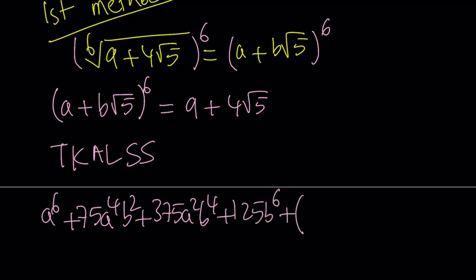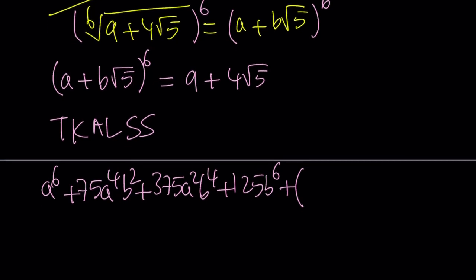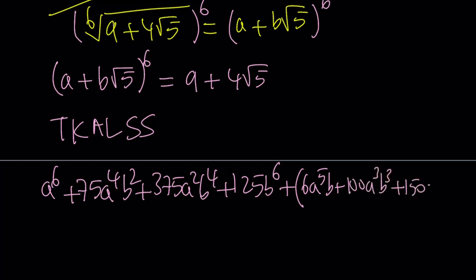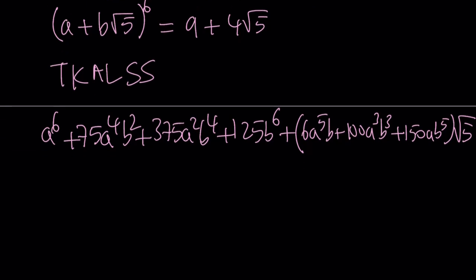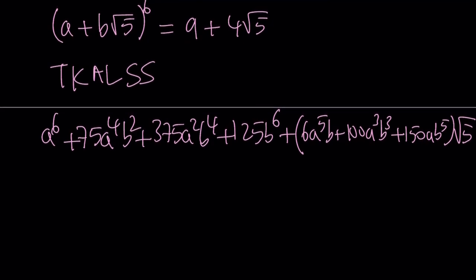Plus, we're going to get the terms that have root 5 in it. So 6a to the fifth b plus 100 a cubed b cubed plus 150 a b to the fifth power, and all of that is multiplied by root 5. Because when you raise root 5 to an even power, you're going to get an integer.